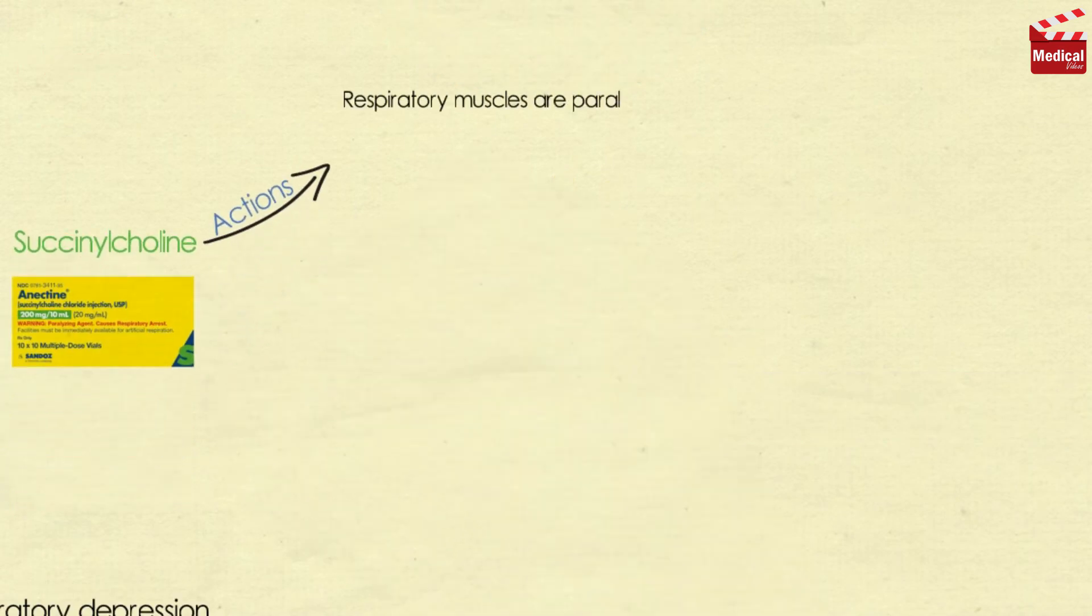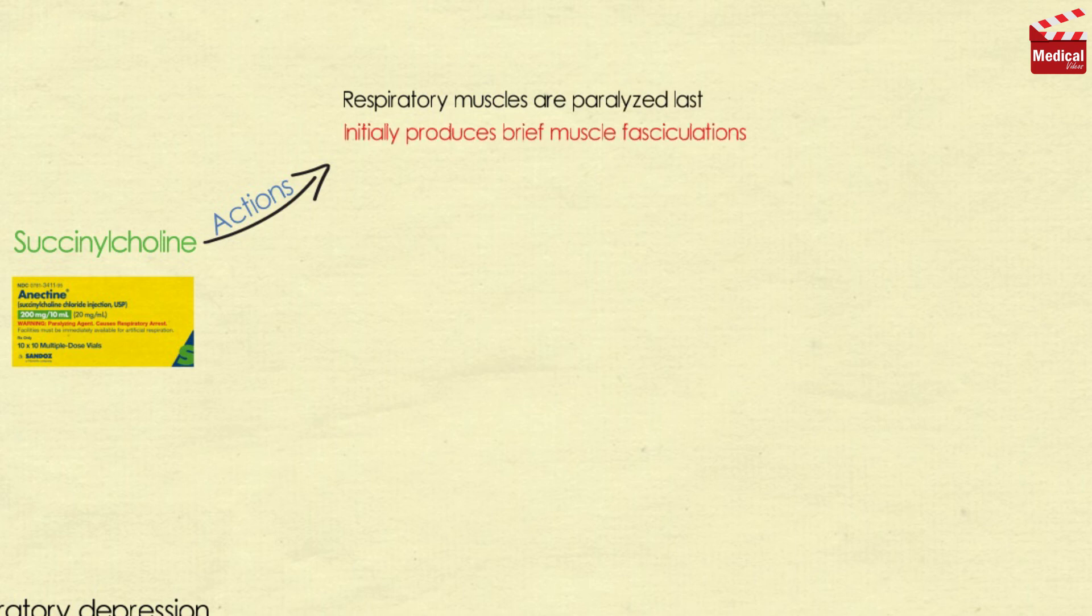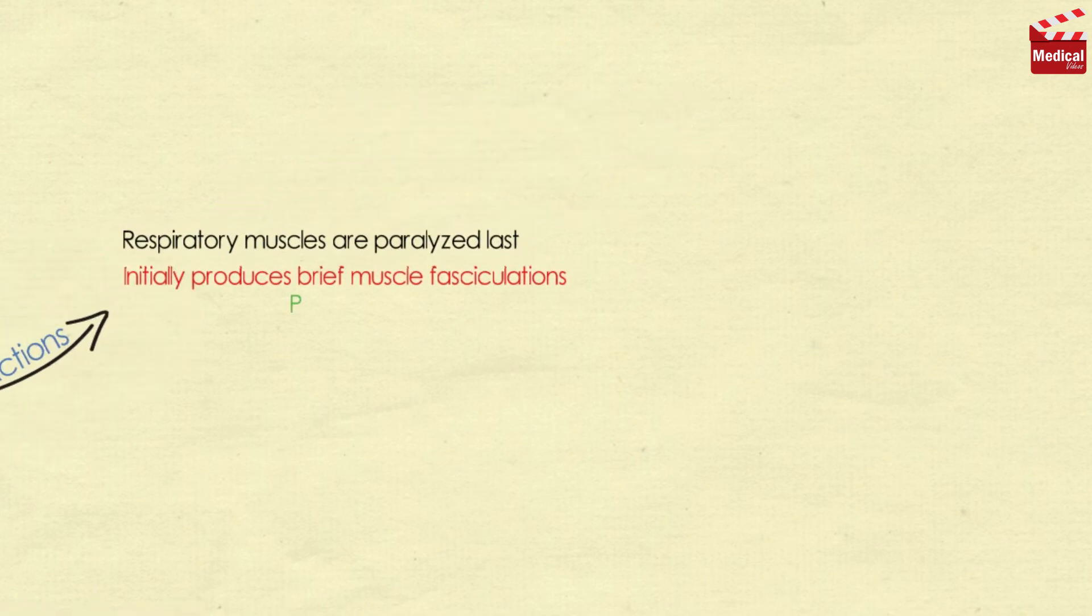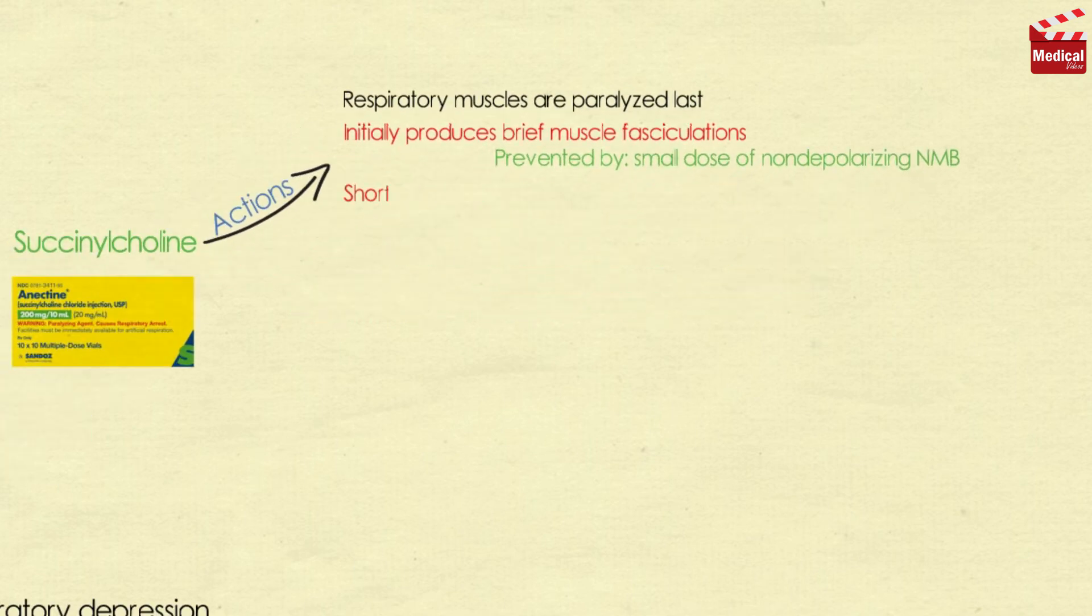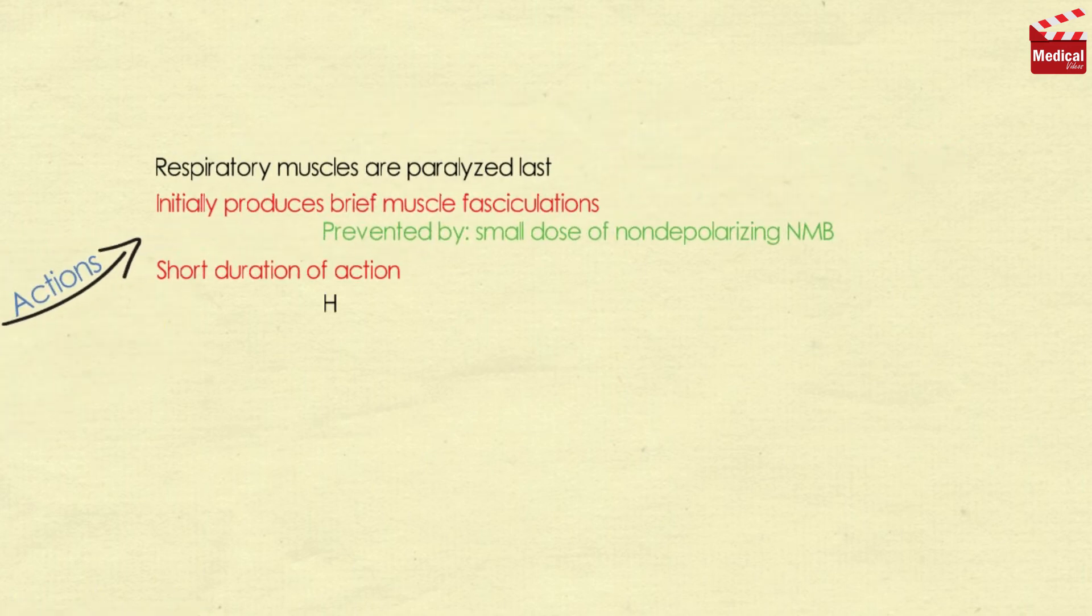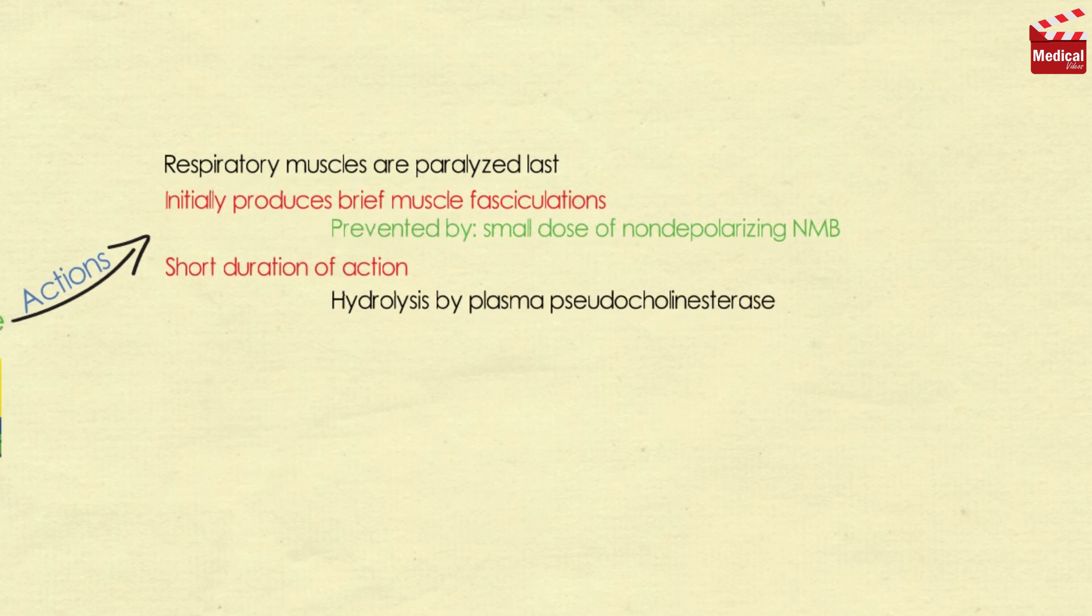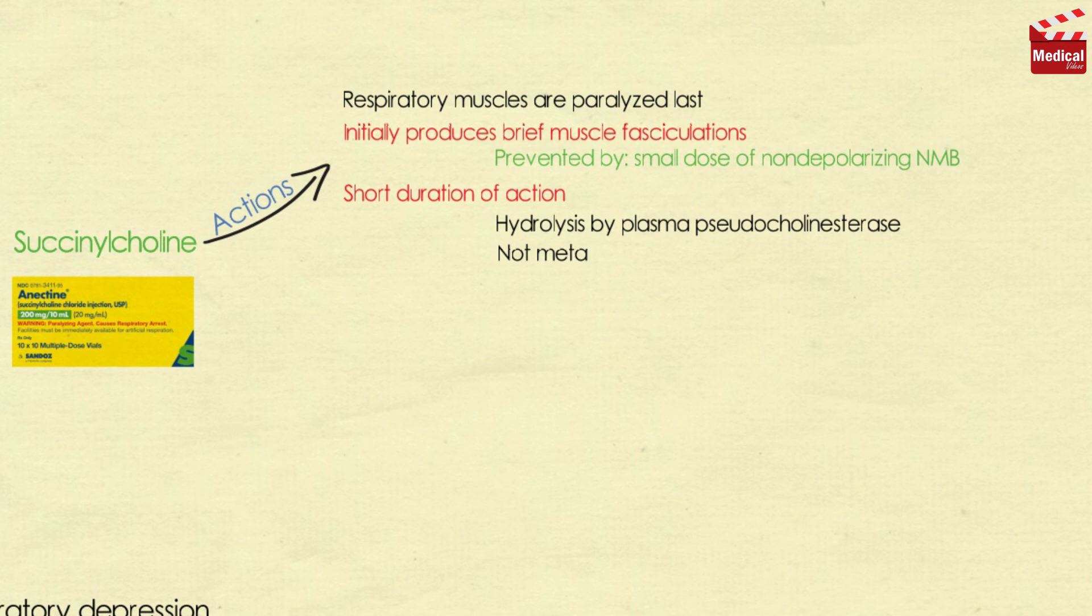Succinylcholine initially produces brief muscle fasciculations that cause muscle soreness. This may be prevented by administering a small dose of non-polarizing neuromuscular blocker before the succinylcholine. Normally, the duration of action of succinylcholine is extremely short due to rapid hydrolysis by plasma cholinesterase. However, succinylcholine that gets to the neuromuscular junction is not metabolized by acetylcholinesterase.